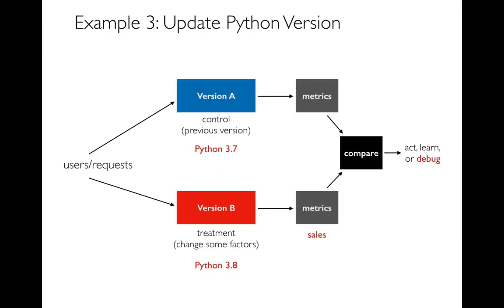One other thing we could use A/B testing for is debugging. Sometimes we expect different versions of what we're deploying to be basically equivalent. For example, let's say you built your web application on Python 3.7 and Python 3.8 comes along and you want to switch. Your anticipation is there'll be no difference in the code — you aren't using any new 3.8 features. But is it possible you have a bug that only starts showing up when you switch? Maybe when we switch to Python 3.8, certain things run a little bit slower and people stop making as many purchases.